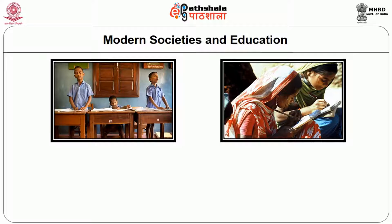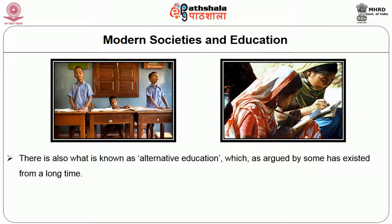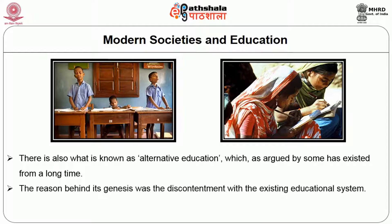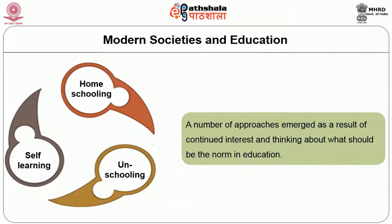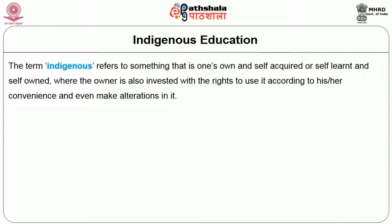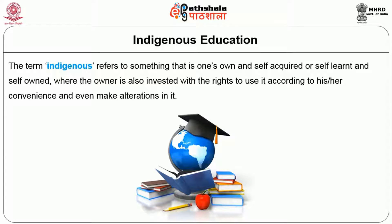Besides these, there is also special education for disabled children and adults, managed by special teachers and trainers. There is also what is known as alternative education, which some argue has existed for a long time — its genesis rooted in discontentment with the existing education system. Mention is also made of self-learning, homeschooling, and unschooling. A number of approaches emerged as a result of continued thinking about what should be the norm in education.